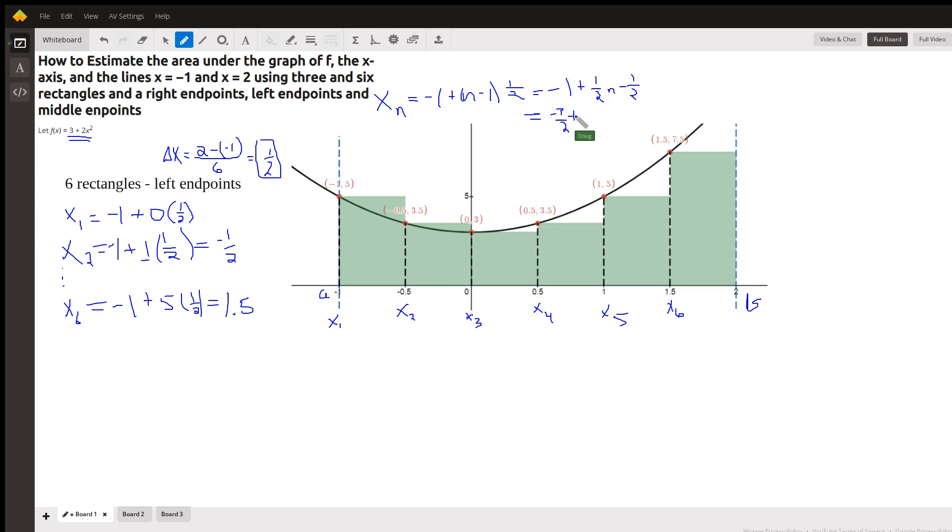Plus n over two. And if you develop that formula, then you don't have to do all these calculations. You can just substitute one, two, three, four, five, and six in here. So for example, if I substitute six for n, I get negative three halves plus six halves is three halves, which is x_6 right there.